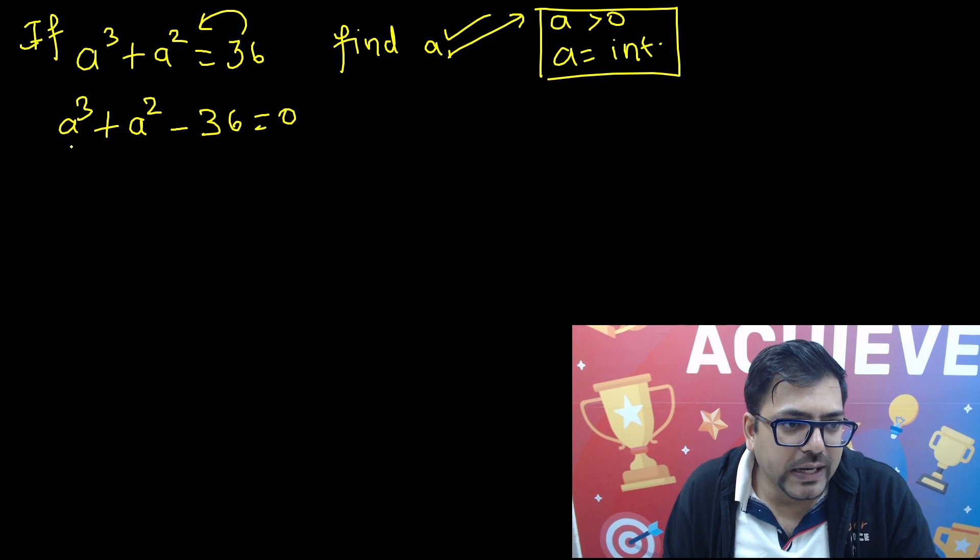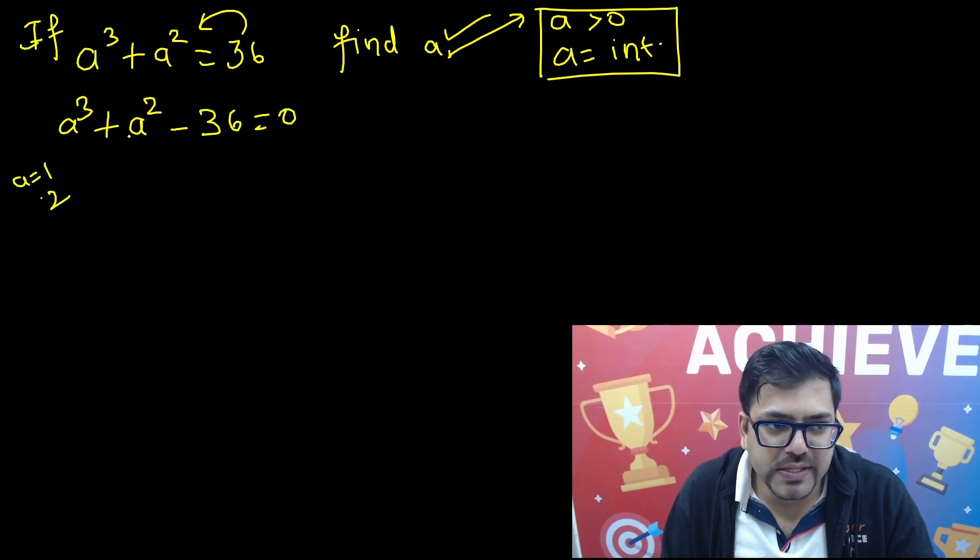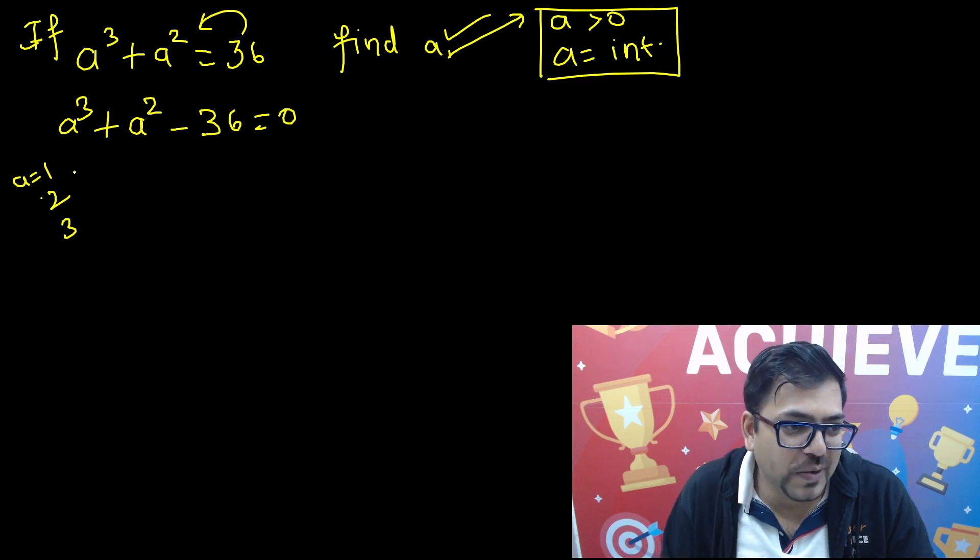So what hit and trial can we do? Obviously a = 1 won't satisfy, a = 2, so 2³ is 8 plus 4 is 12, no. a = 3, 3³ is 27, 3² is 9, 27 plus 9 is 36. Yeah that is satisfying! So we have got a hit and trial very easily, a = 3.